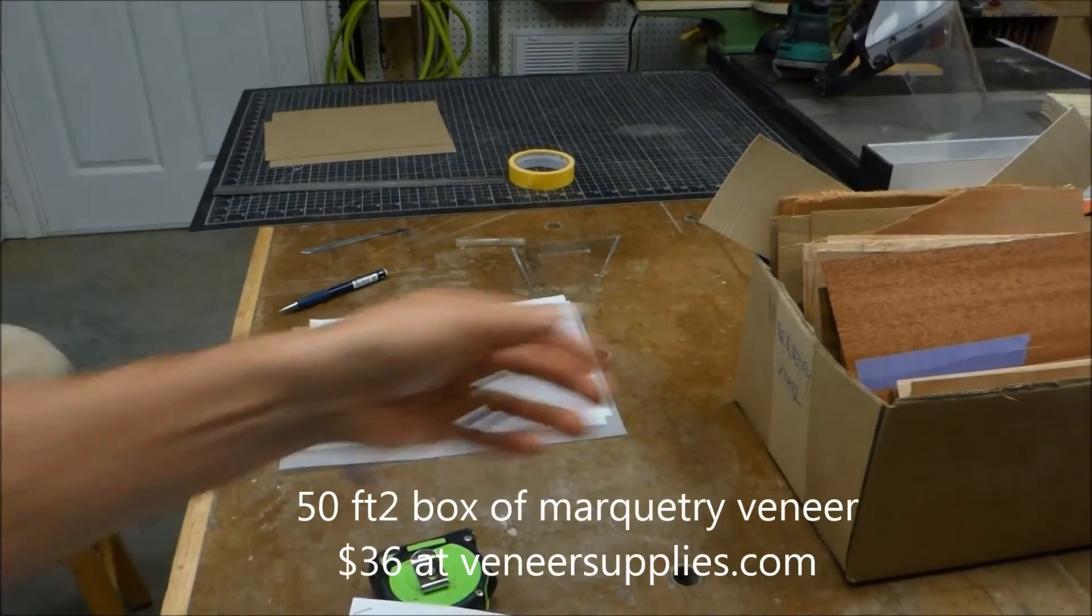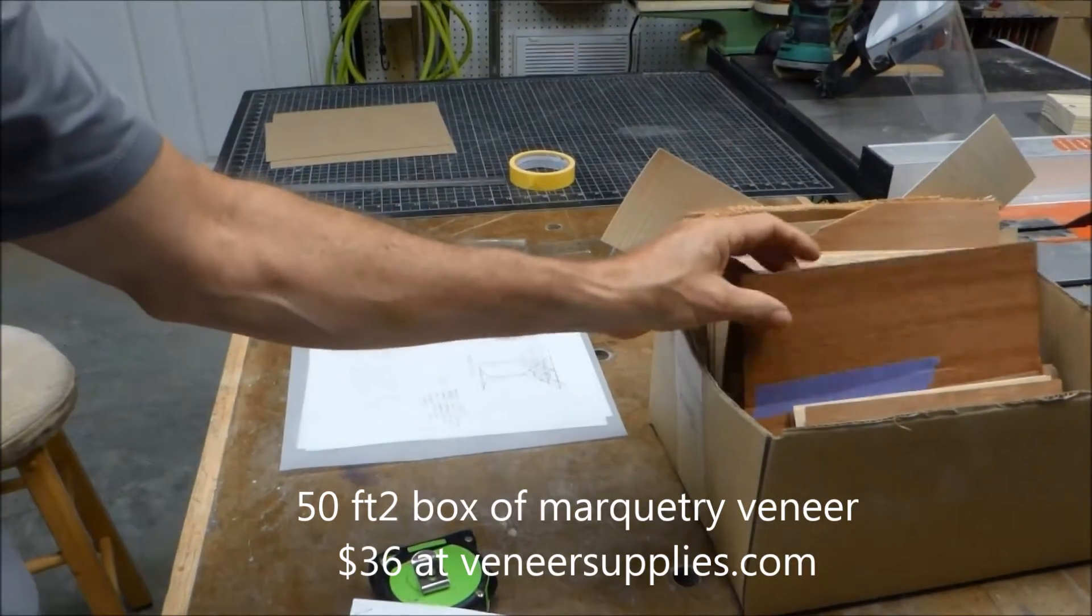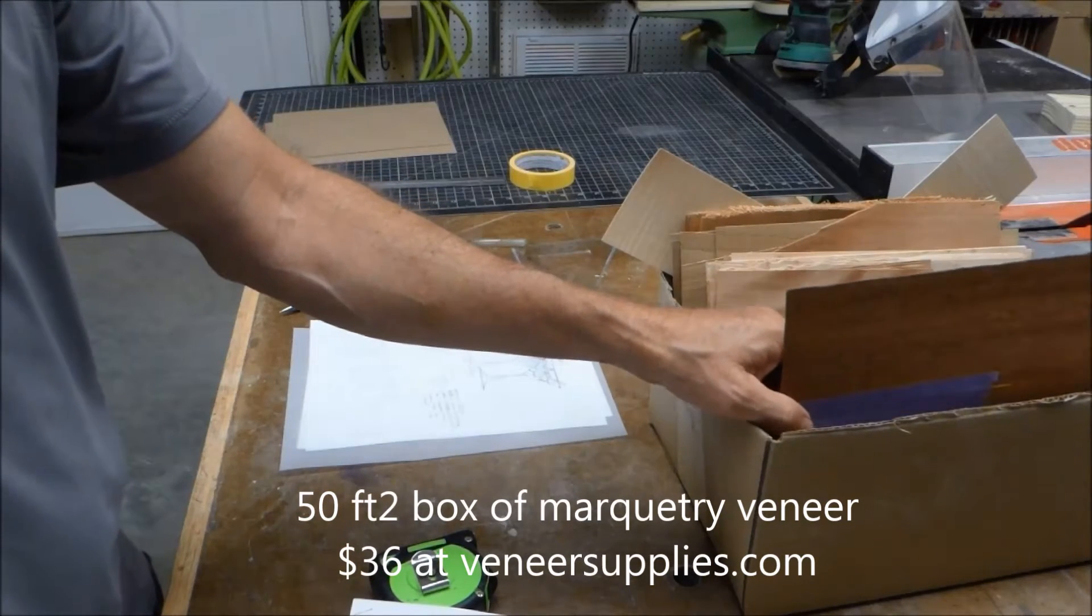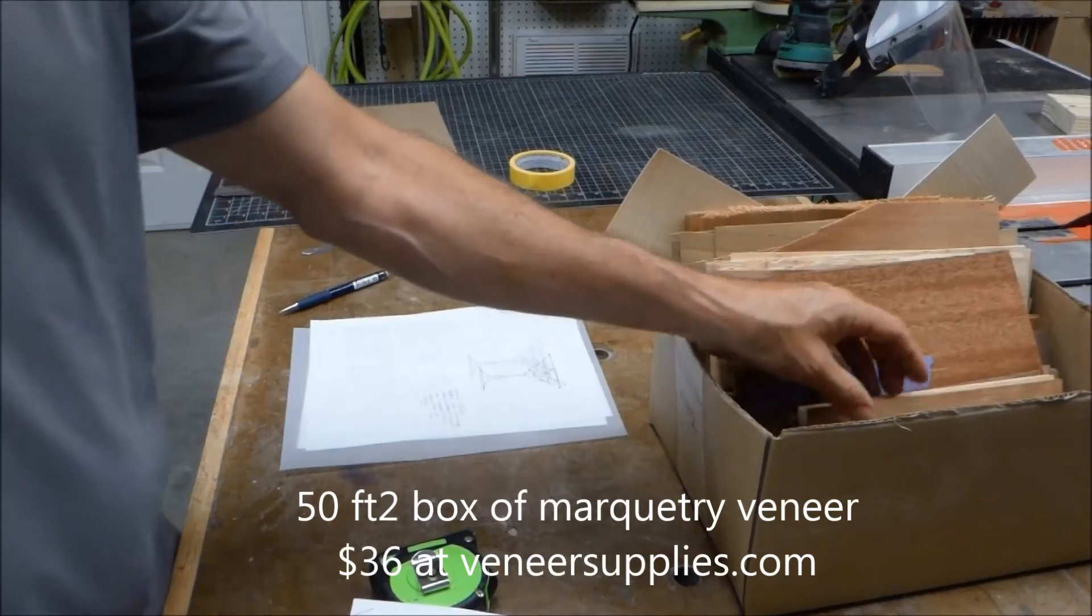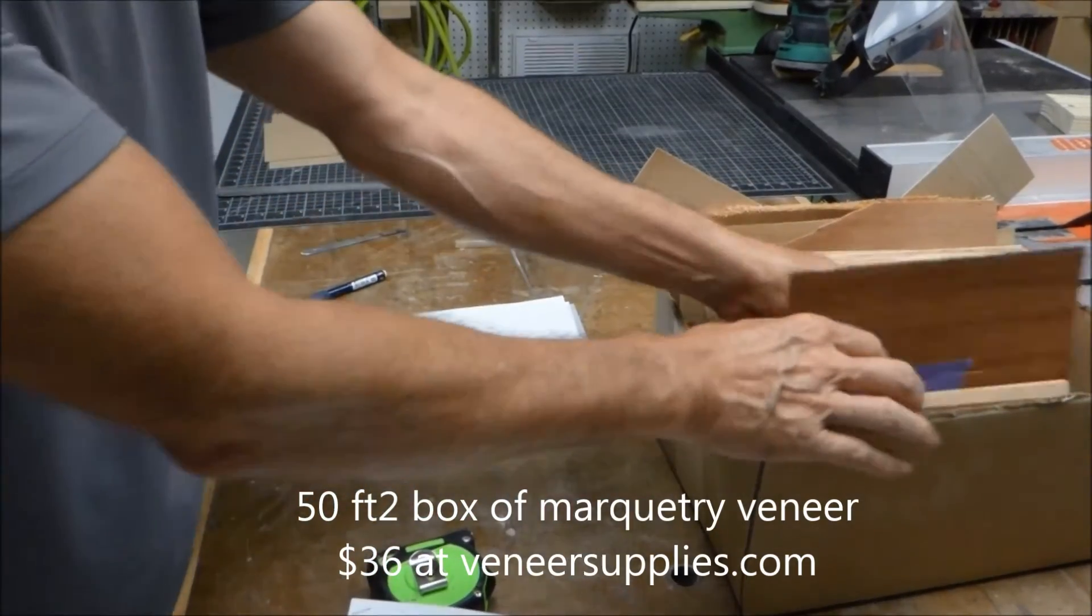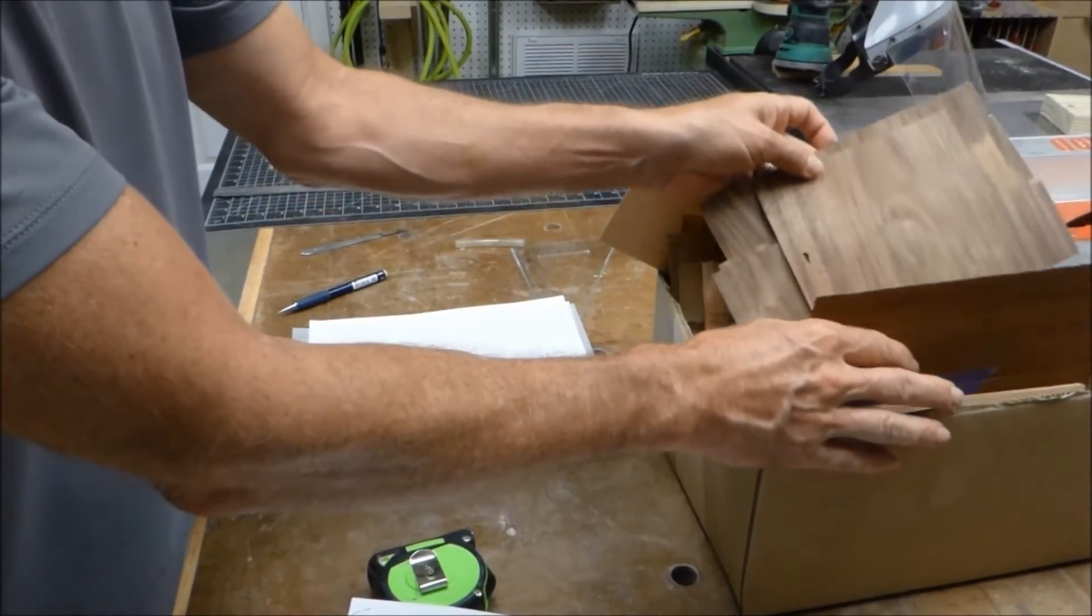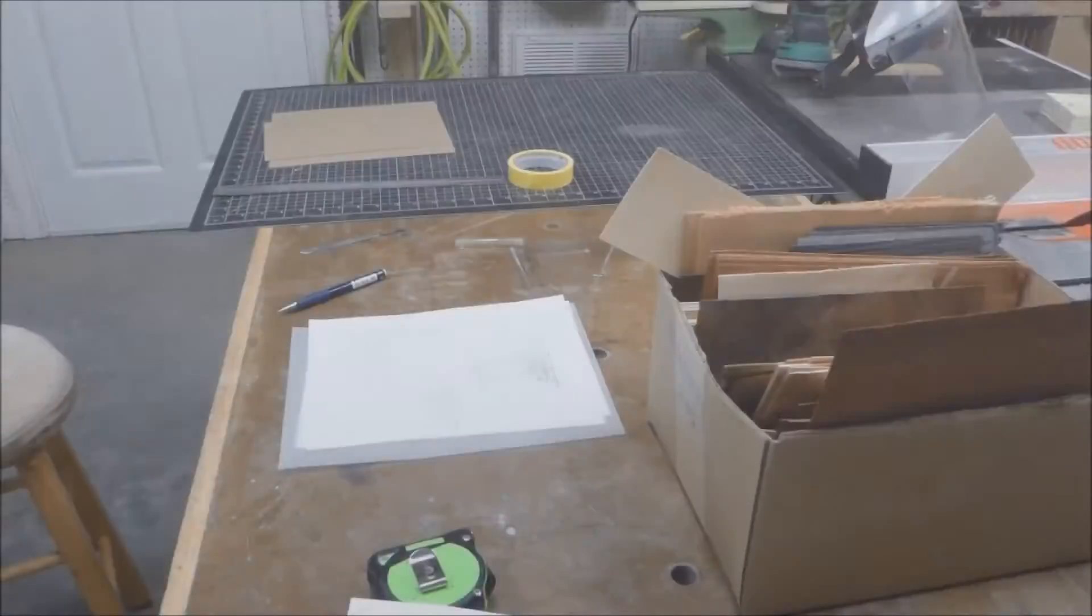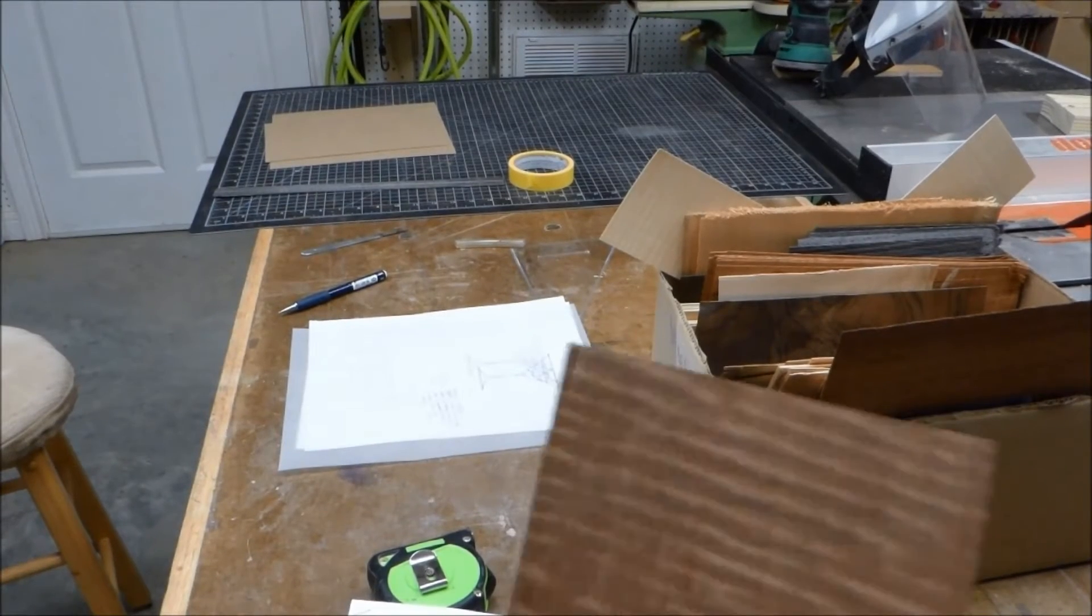Step 2 is to select some veneers that you're going to use. You need a box of veneers, and a great way to get started is this box that I bought. It's 50 square feet of different pieces of veneer that I got for only $36 from veneersupplies.com. Basically these are random cutoffs of different scrap pieces, but they're great for marquetry. Probably at least 20 different varieties in this box, and so I went through and picked some.